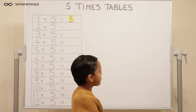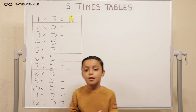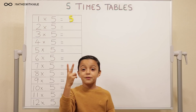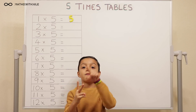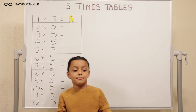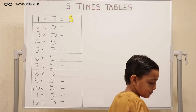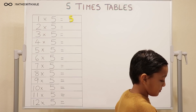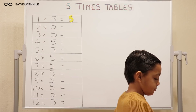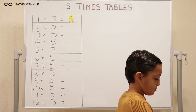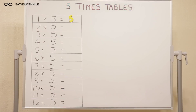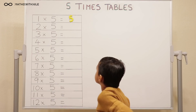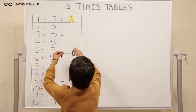Then two times five, so I'll get two fingers and five — ten. Very good, so you're counting up in fives, so two lots of five, so two times five is ten.